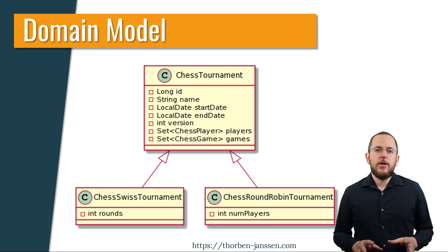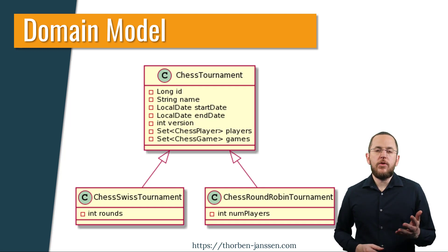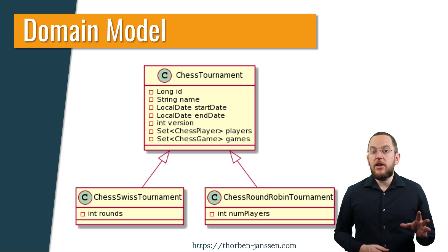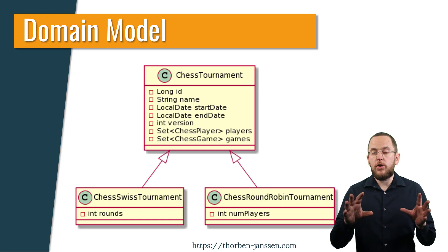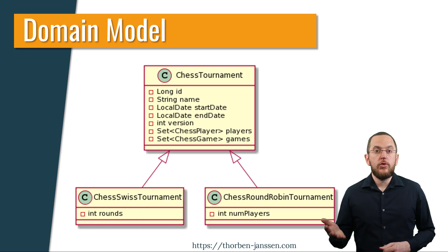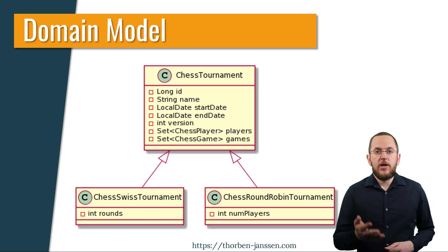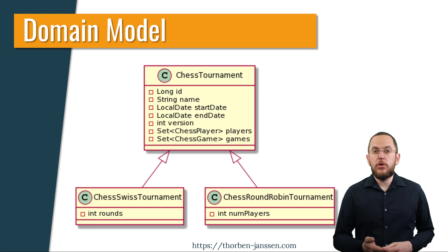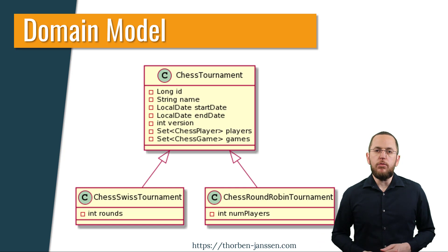Let's take a quick look at the domain model used in this article before diving into the mapping definition. The ChessTournament class is the superclass of ChessSwissTournament and ChessRoundRobinTournament. The ChessTournament class defines almost all attributes. The ChessSwissTournament class adds the Rounds attribute and the ChessRoundRobinTournament class adds the NumPlayers attribute.